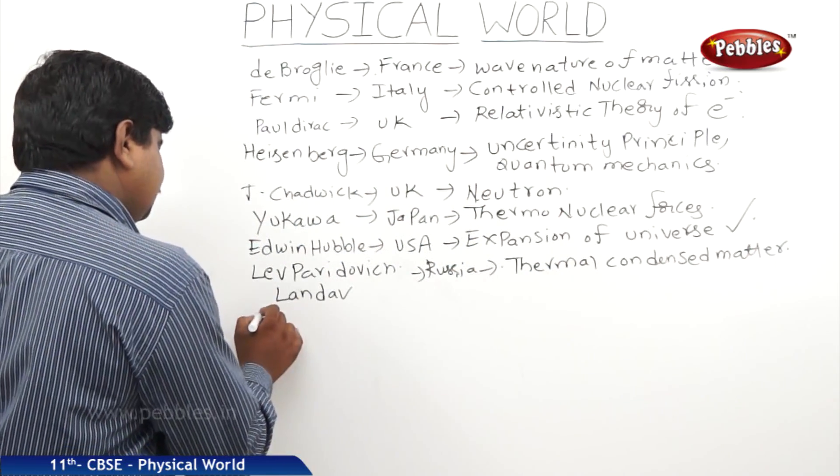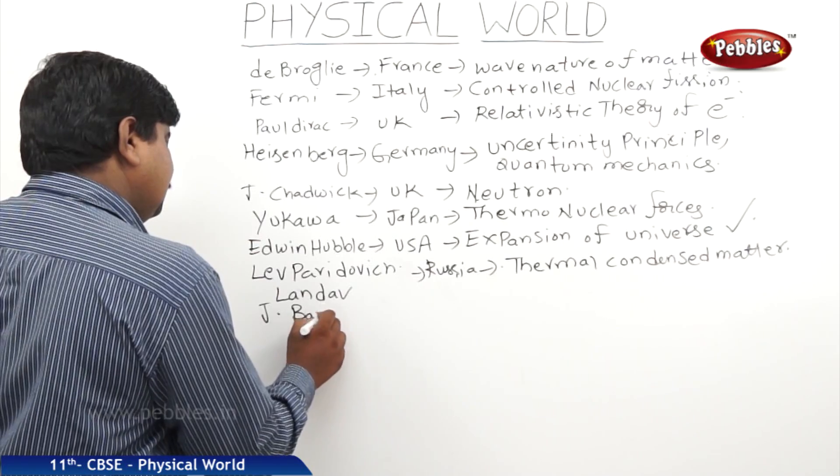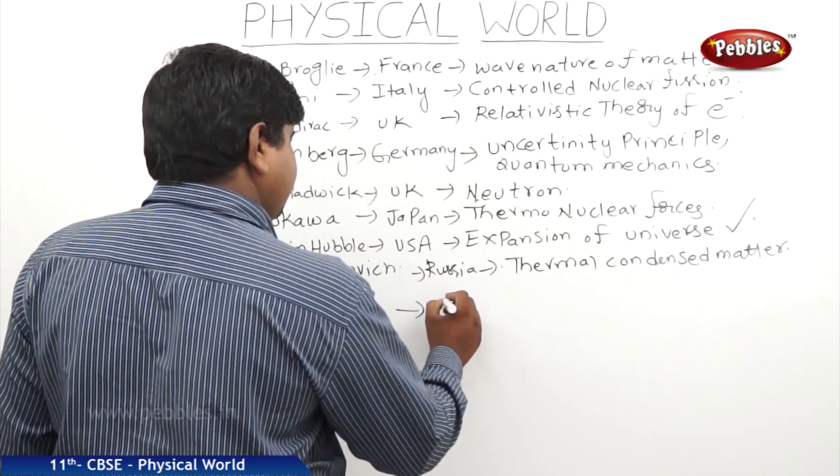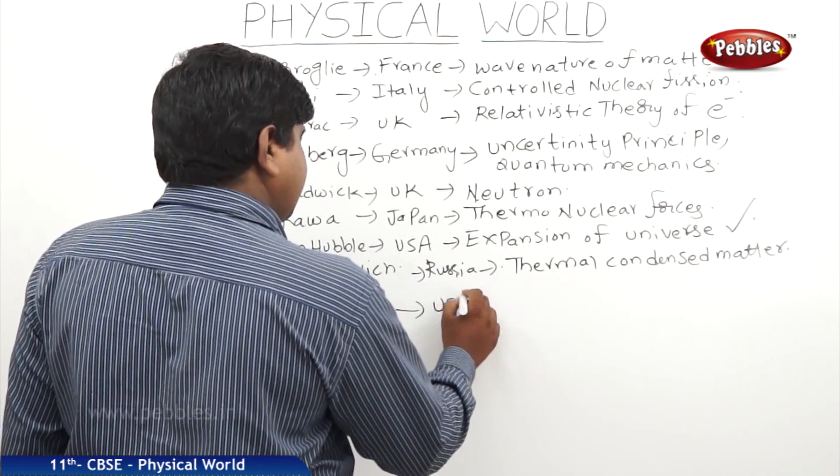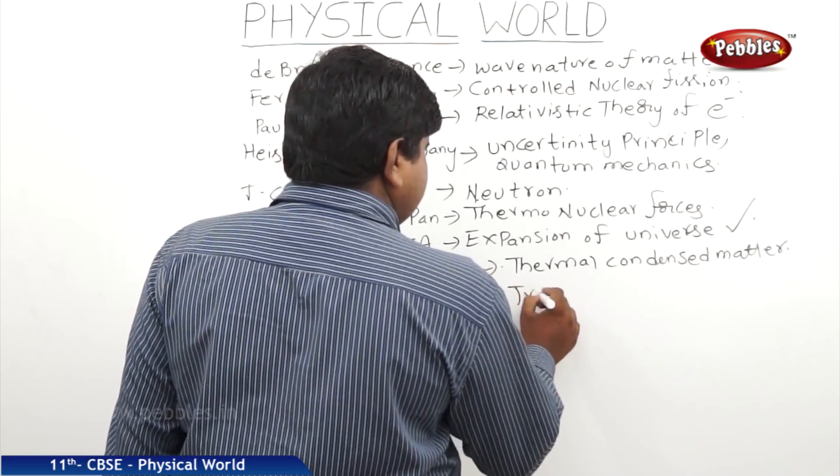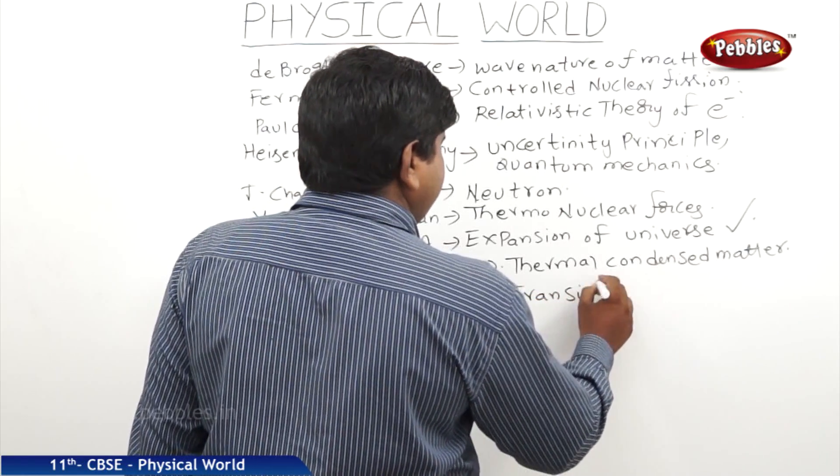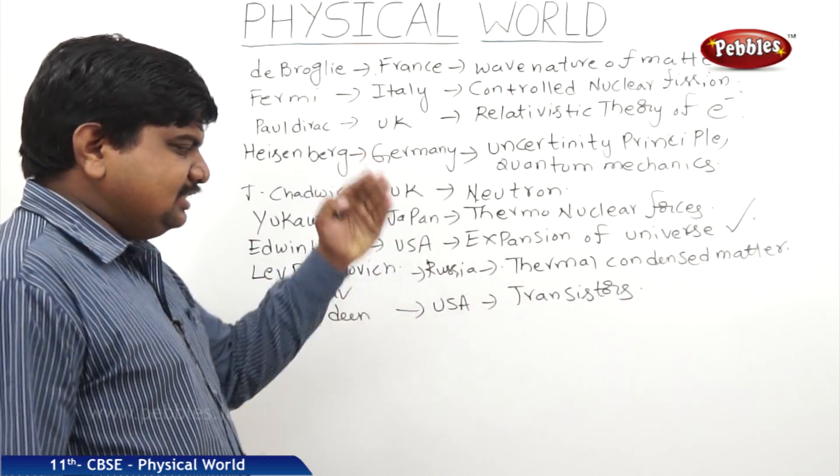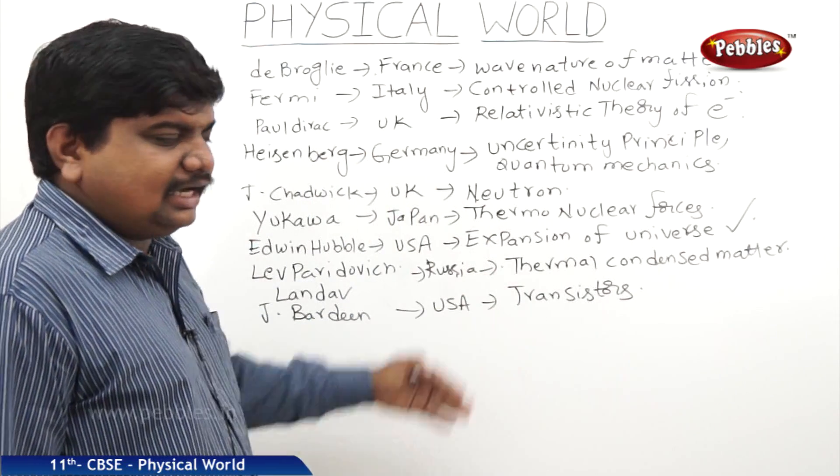The next great scientist was J. Bardeen, he is from USA, who has discovered the transistors. With the help of this transistor, we are making simple circuits also. It has really changed the face of the electronics and electrical equipment.